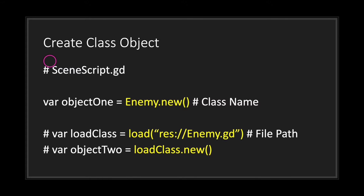To create an object, use the registered class name — in this case 'Enemy' — followed by the new keyword or new method. You can also create a class object with file paths, however that will take two lines of code.